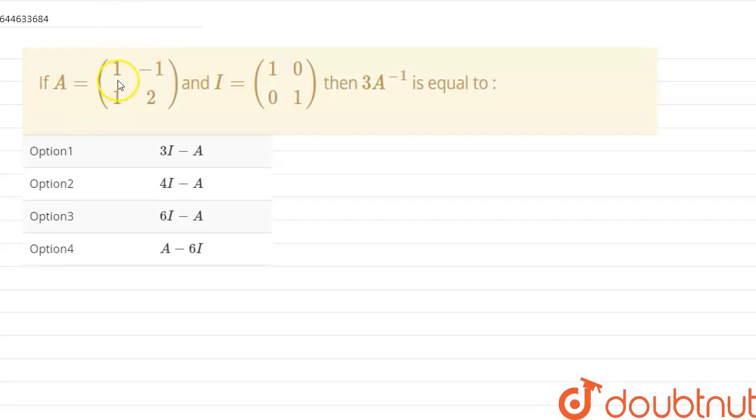If A is a matrix (1, -1; 1, 2) and I is the identity matrix (1, 0; 0, 1), then the value of 3A^(-1) is equal to, and we need to find the value in terms of I and A.